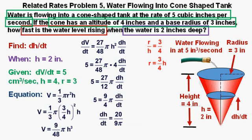And cross multiplying the 4, and at the same time cross dividing the 9π, we get dh/dt = 20/(9π). And finally, we tack on the units, inches per second.